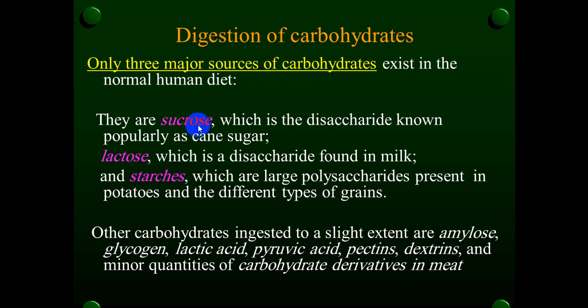Sucrose is a disaccharide known popularly as cane sugar. Lactose is also a disaccharide, but found in milk. Starches are large polysaccharides present in potatoes and different types of grains.